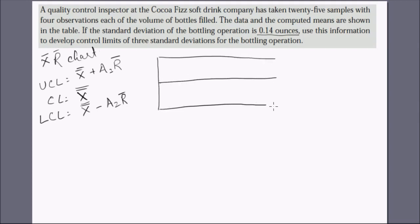On the control chart we denote the sample numbers — first, second, third, and so on — then mark our data values. That was our X-bar and R chart. Now let's move on to the P and C charts. Let me take another question and solve it.